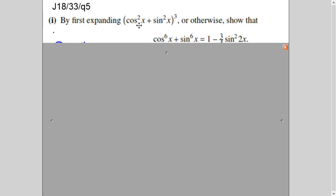So let's begin with the question. The question is saying, first by expanding (cos²x + sin²x)³, or otherwise, show that cos⁶x + sin⁶x = 1 - (3/4)sin²2x. So basically you have to show this, and the question is saying very clearly, either expand it first and then show, or otherwise whatever comes in your mind.